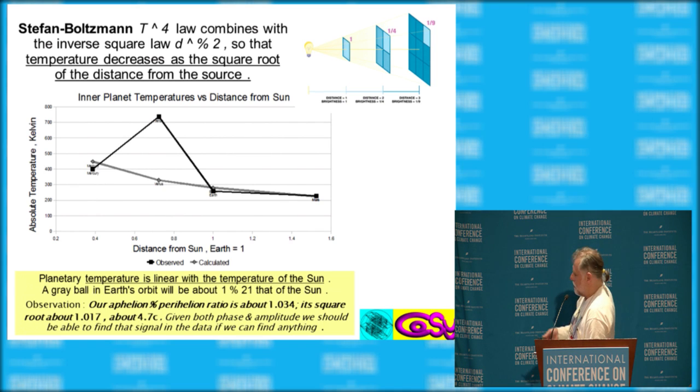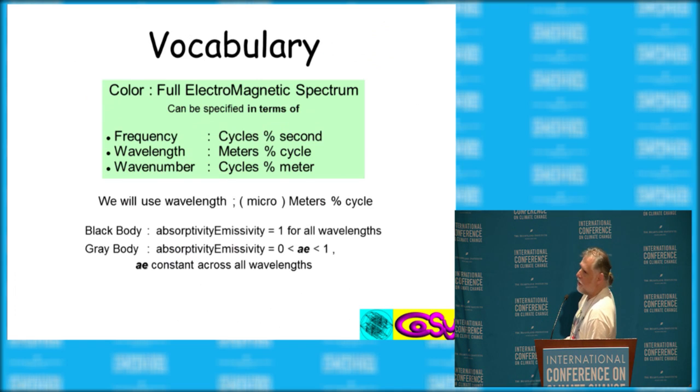which is about 4.7 percent centigrade, which is much larger than what the total variation that's talked about is having happened over the industrial era. And actually, Tom Weissmuller yesterday showed a graph which shows that effect. So I was very interested to see that. And talk about color, talking about the full spectrum.